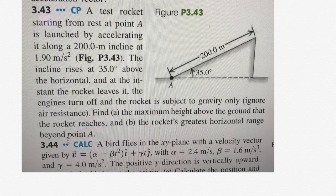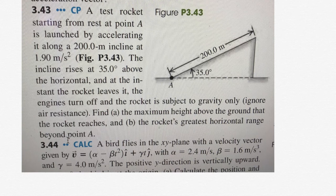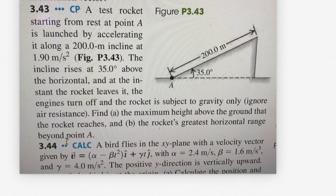We have a fun problem — number 343 from the Young and Freedman University Physics book. A test rocket starts from rest at point A, launched by accelerating it along a 200-meter incline at 1.9 meters per second squared at 35 degrees. At the end, the rocket leaves the ramp, the engines turn off, and it's subject only to gravity. If you can do this question, you've mastered two-dimensional motion and kinematics.